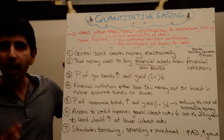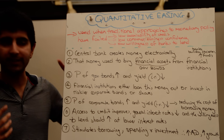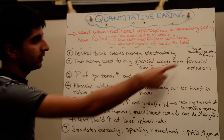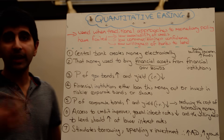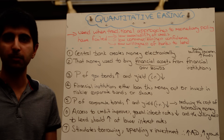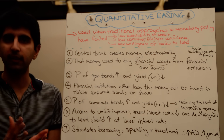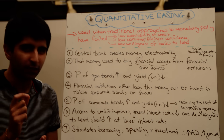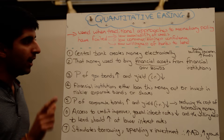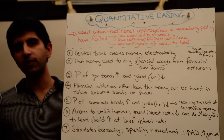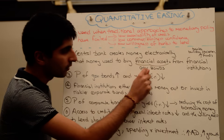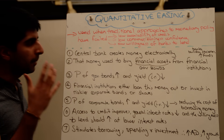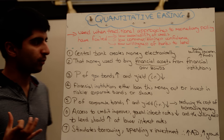Then that money is used to buy up financial assets — assets from financial companies like banks, building societies, hedge funds, pension funds, sovereign funds, and mutual funds, all these different financial institutions in the economy. Financial assets are bought from these institutions, but especially when it came to QE in the UK, it was government bonds that were bought up, and that was done for a very specific reason.